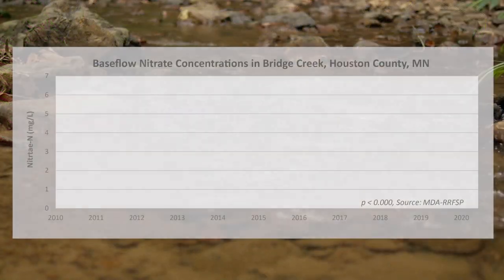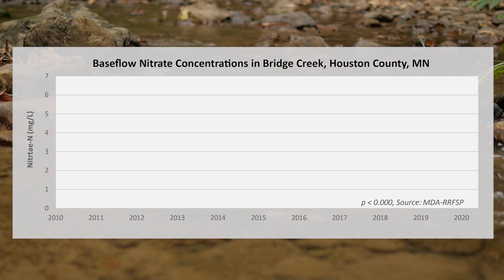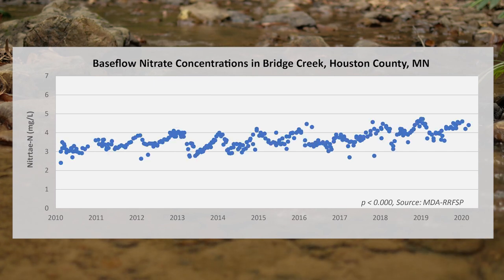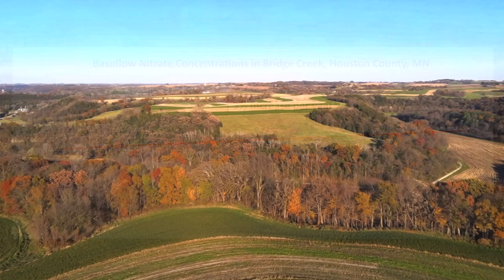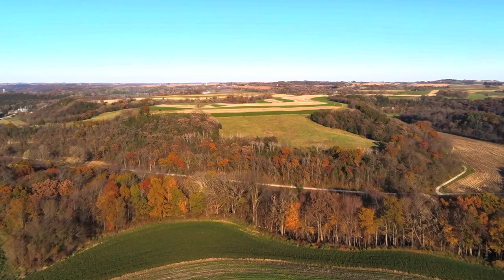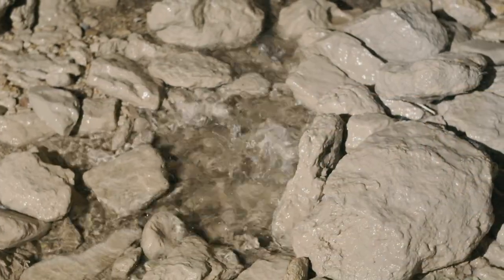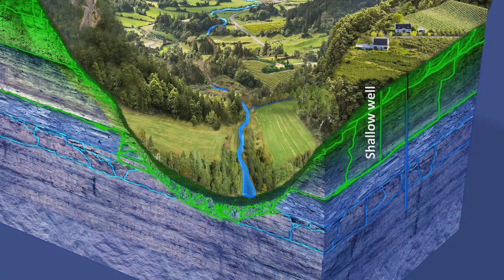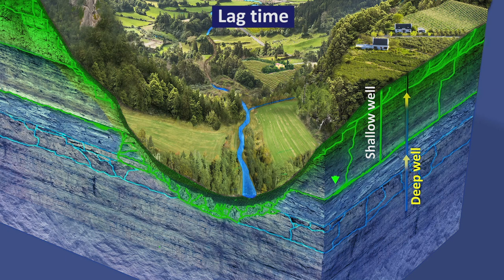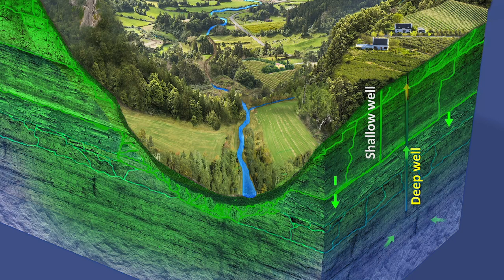Long-term water monitoring has shown that nitrate concentrations are increasing in groundwater flowing to Bluffland streams at a rate of about 3% per year. This does not necessarily mean that nitrogen sources from the land surface are increasing at this same rate — just that nitrate leached today, or yesterday, or 40 years ago has not fully made its way into deeper groundwater. This delayed response, called lag time, is also occurring in some deeper drinking water wells, where nitrate concentrations are slowly increasing at a similar rate.